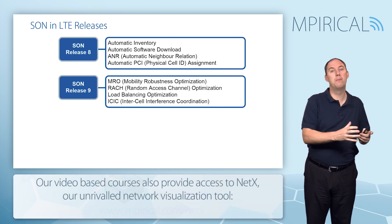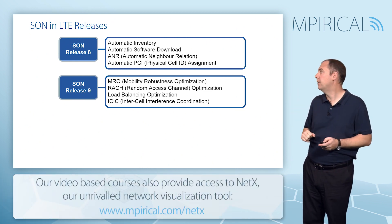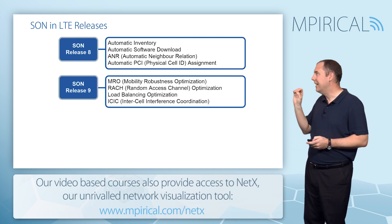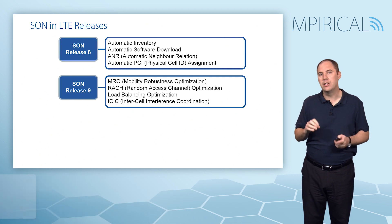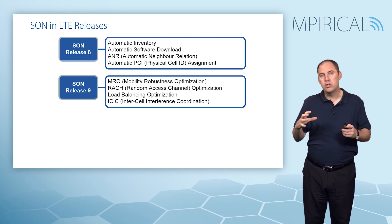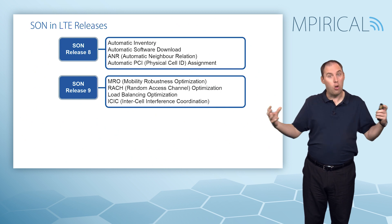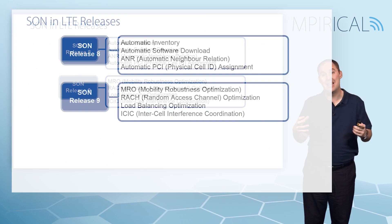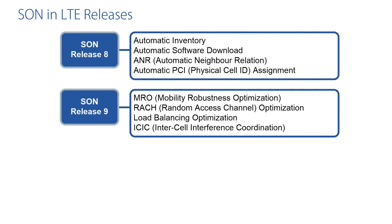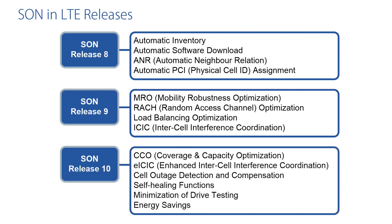Also in Release 9 is ICIC (Inter-Cell Interference Coordination). Because LTE uses a single frequency deployment with the same frequency on adjacent cells, there is significant interference, and various techniques are needed to mitigate it — SON plays an active part in that.